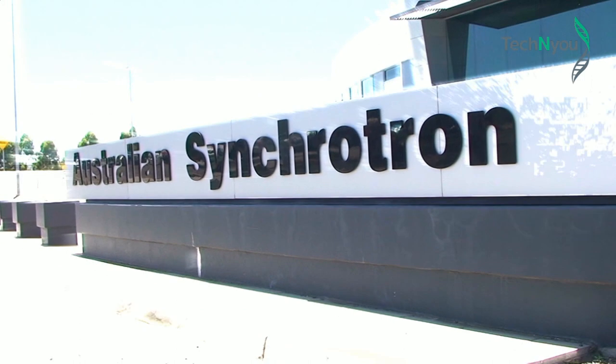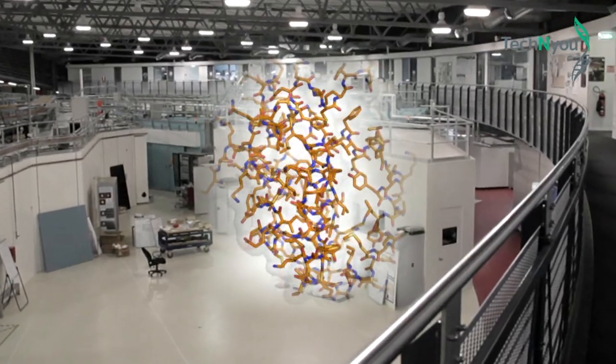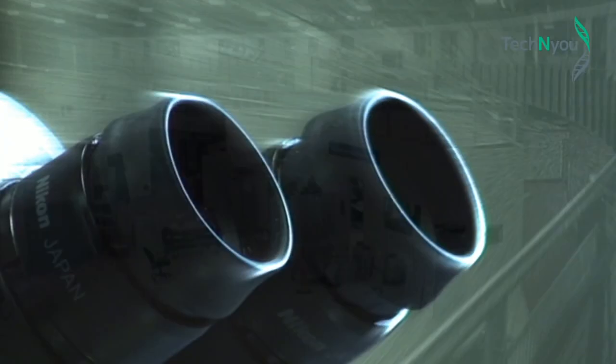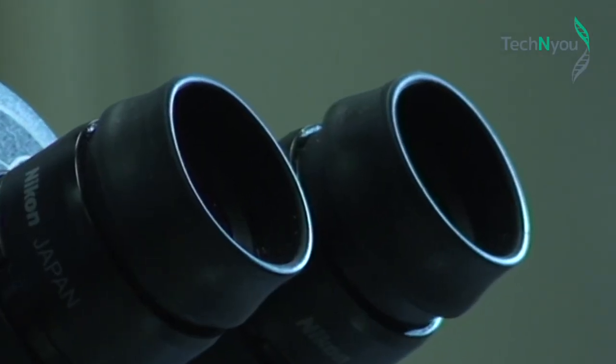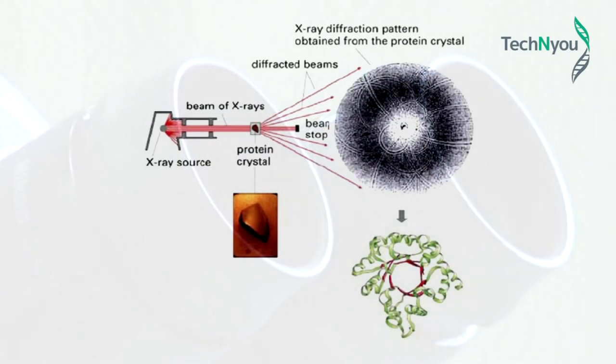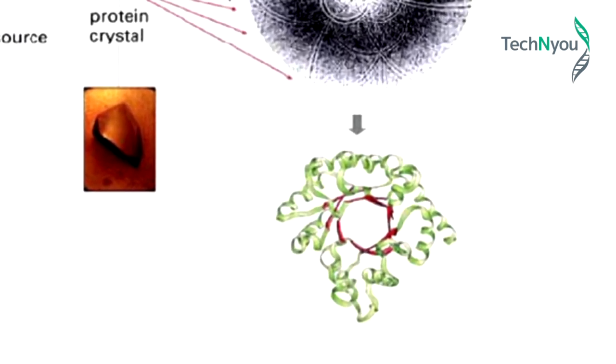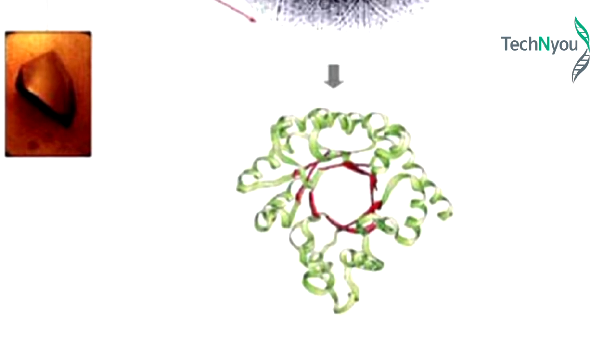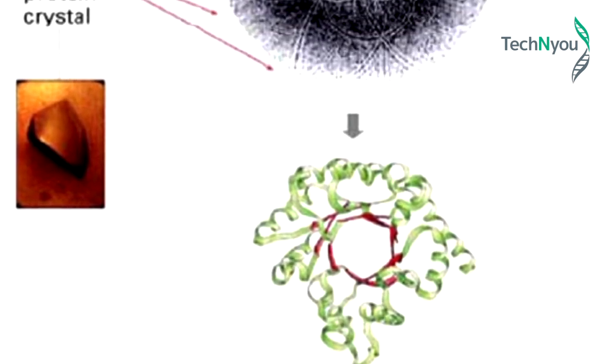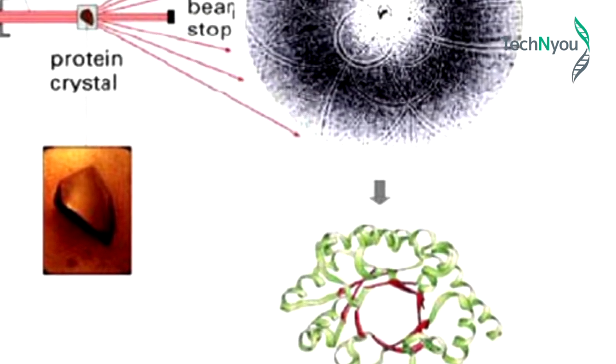Scientists use many sophisticated instruments to measure the dimensions of objects that are too small to see. But one of their simplest tools are X-rays. Because X-rays have wavelengths similar to the width of single atoms in a protein molecule, they can be used to illuminate the protein and generate a diffraction pattern.